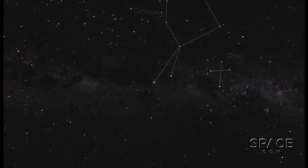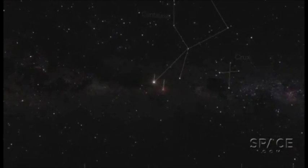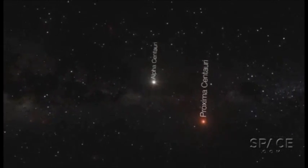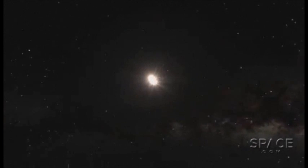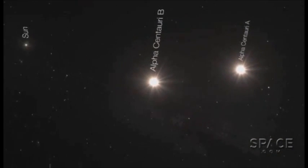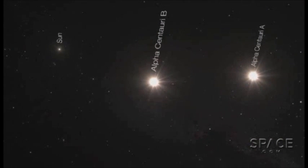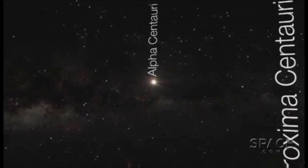Look up into the skies of the Southern Hemisphere, and one of the brightest stars you'll see is Alpha Centauri. But it's actually a triple star, with two very sun-like stars called A and B orbiting quite close to one another, plus a more distant red dwarf named Proxima Centauri.